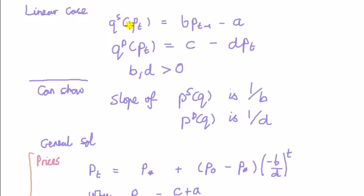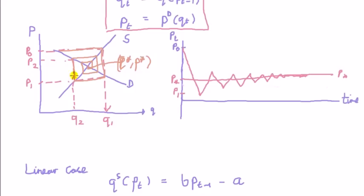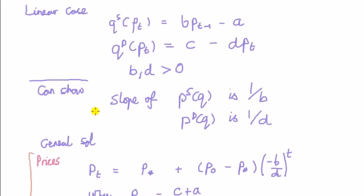We need the condition that b and d is bigger than zero, because b and d determine the slope of the inverse supply and inverse demand. Remember, this line here is the graph of the inverse supply, this is of the inverse demand, because they're both functions of q. In other words, we have to rearrange for p if we want the inverse supply and inverse demand. If we do that, we'll find that the slope of the inverse supply is 1 over b, and the slope of the inverse demand is 1 over d.